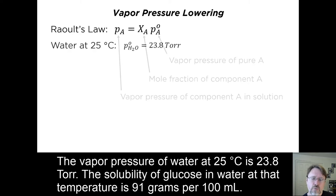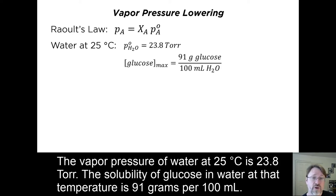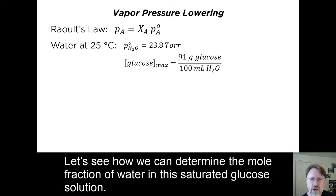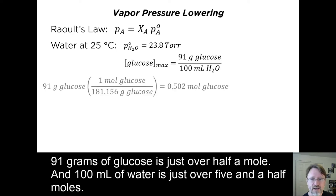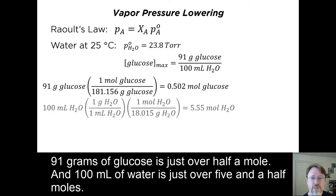The vapor pressure of water at 25 degrees C is 23.8 Torr. The solubility of glucose in water at that temperature is 91 grams per 100 milliliters. Let's see how we can determine the mole fraction of water in this saturated glucose solution. 91 grams of glucose is just over half a mole, and 100 milliliters of water is just over five and a half moles.